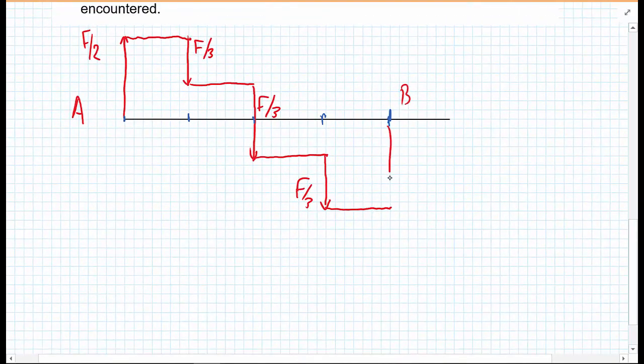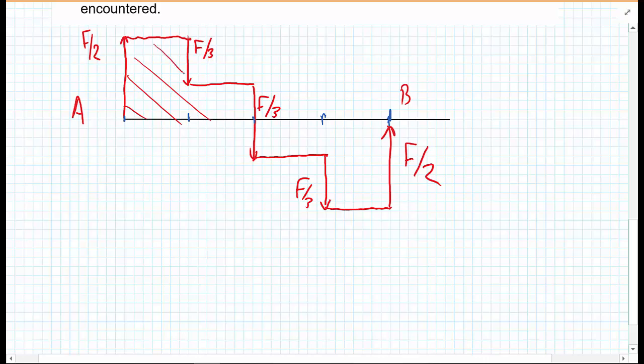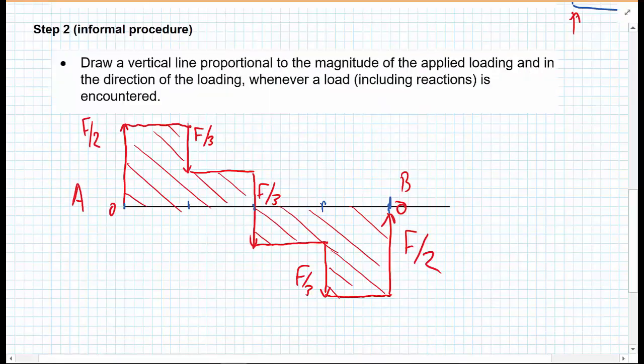And from this point, we move along the beam again, until we reach the next point that a load is applied. And now we get to distance 3L upon 4 along the beam. And now we apply another force of F upon 3 at this point. So the shear force will remain constant again, until we get to the reaction force at B. And that reaction force at B is F upon 2. And then we can shade in the diagram. And if you've done this correctly, you should get to 0 shear force at the end of the beam. So this was a sketch diagram of this shear force.